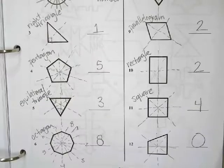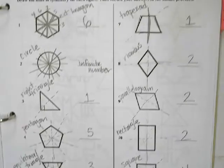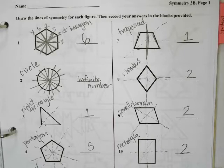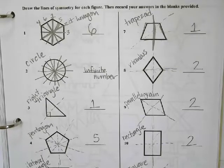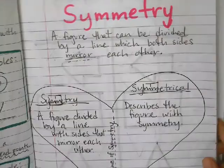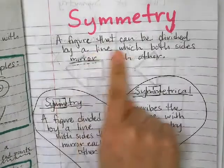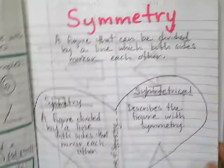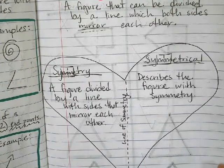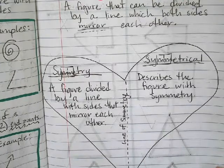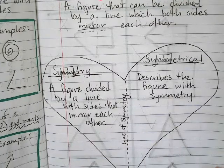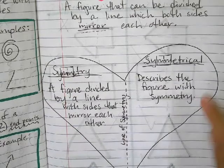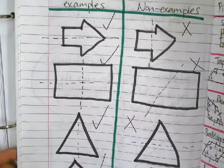We went on to page 76—lines of symmetry. We did some notes: a figure that can be divided by a line where both sides mirror each other describes a figure with symmetry, or symmetrical. Then we did some examples of symmetry.